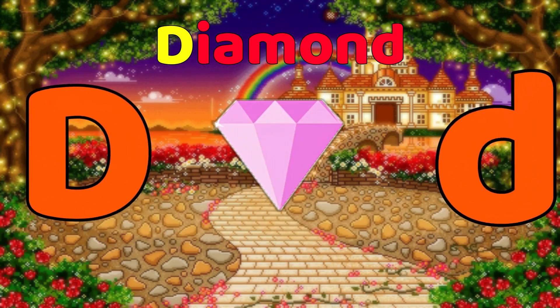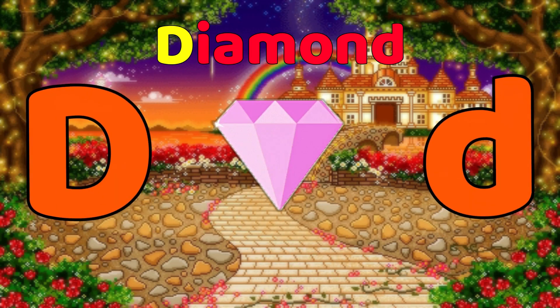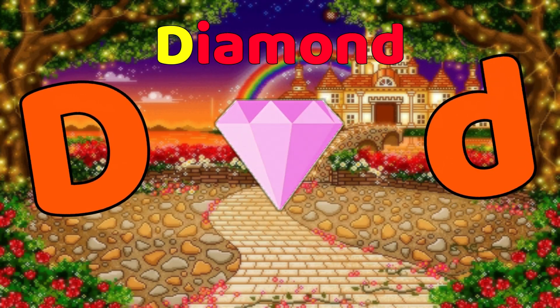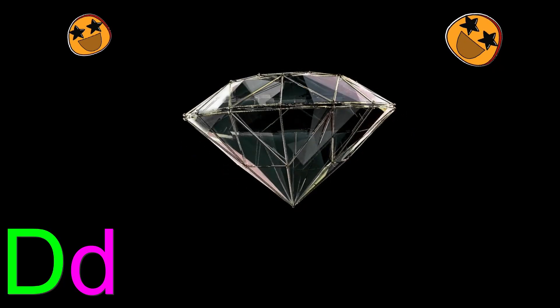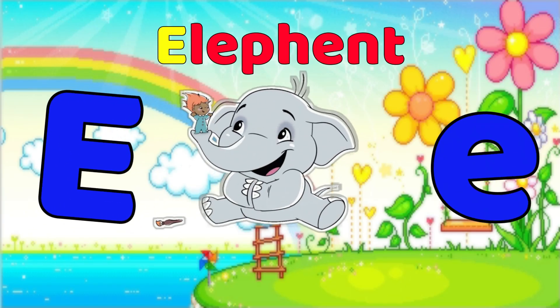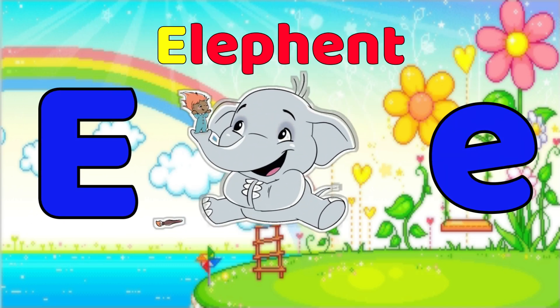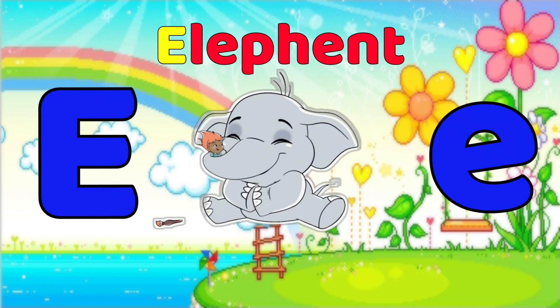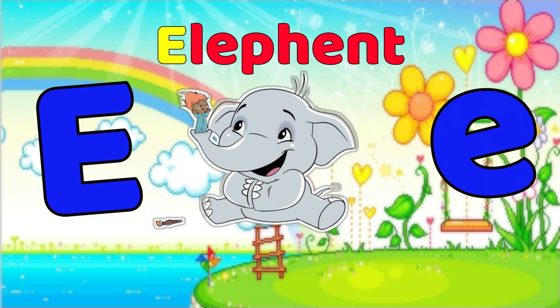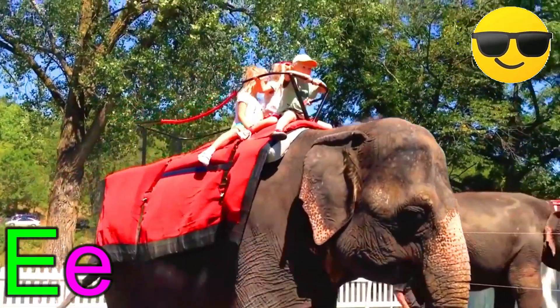D is for Diamond, d-d-diamond. E is for Elephant, e-e-elephant, elephant.